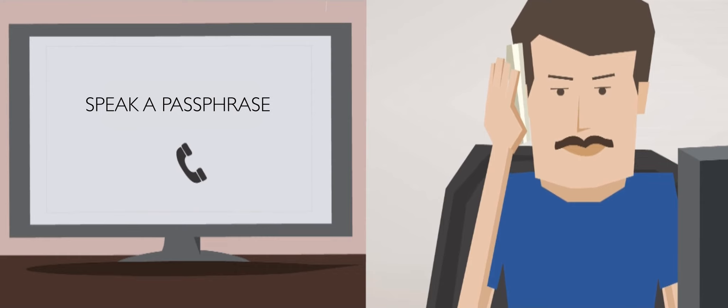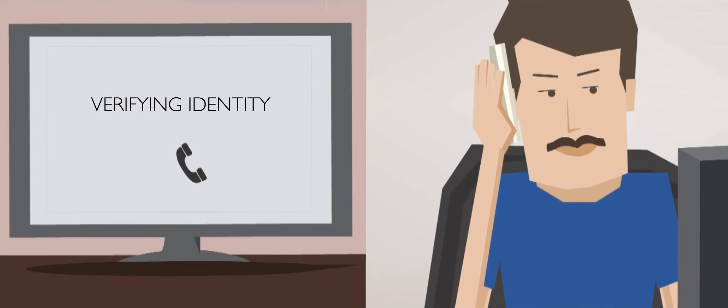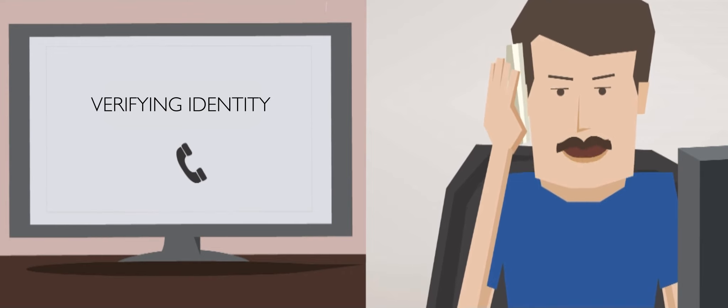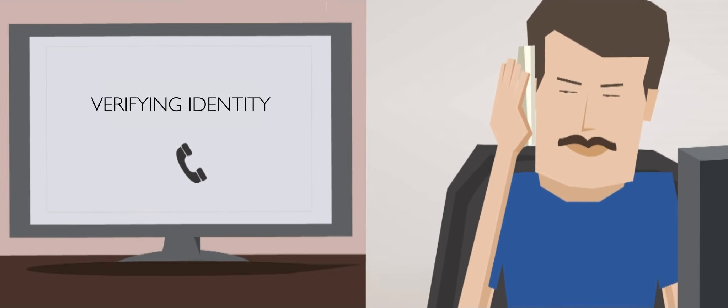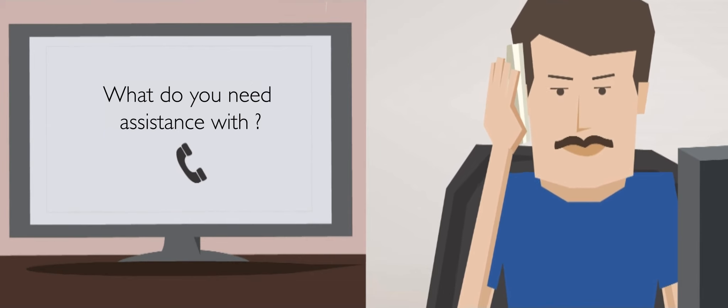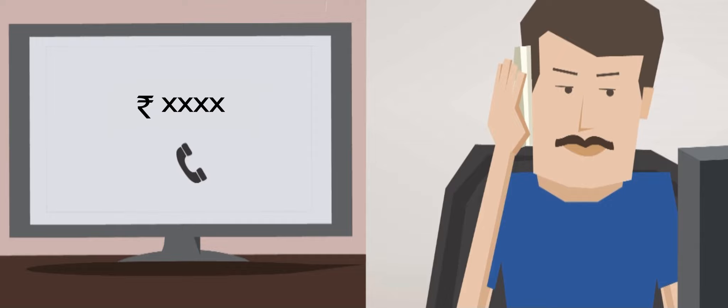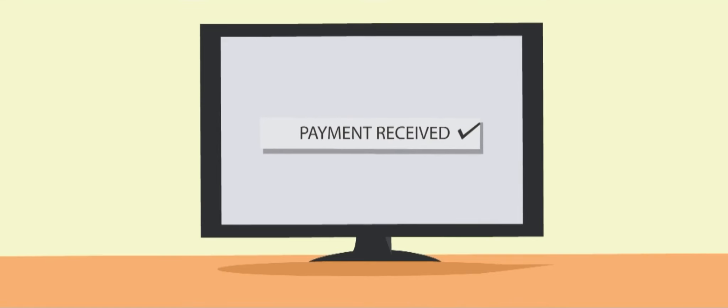Voice Ensure first verifies Muttu's identity by asking him to speak a passphrase into his phone. Once the voice biometric system verifies his identity, the system asks him what he needs assistance with. When Muttu responds that he wishes to make a payment, Voice Ensure understands what is required and tells him the bill amount. It confirms Muttu's payment details, then takes him through the payment process right on the call.